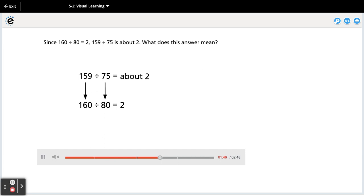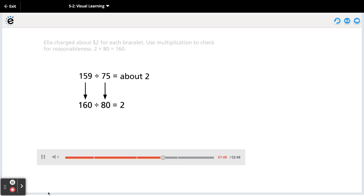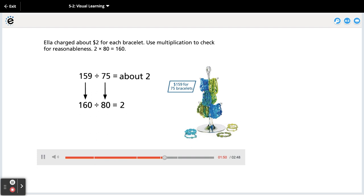What does this answer mean? Select your answer. Ella charged about $2 for each bracelet. Use multiplication to check for reasonableness. 2 times 80 equals 160.